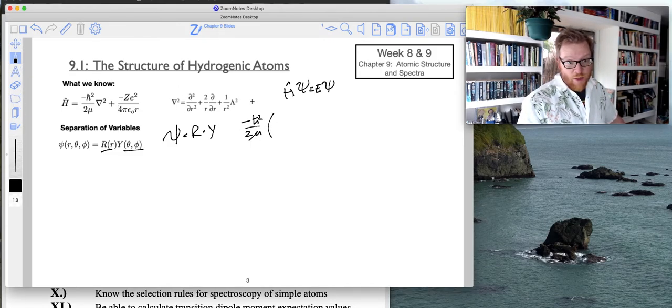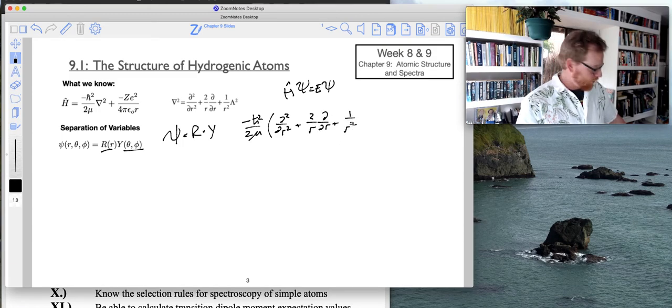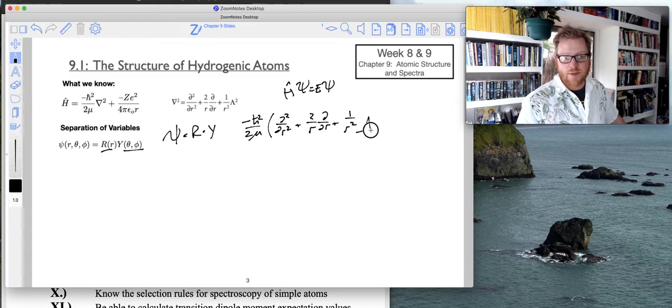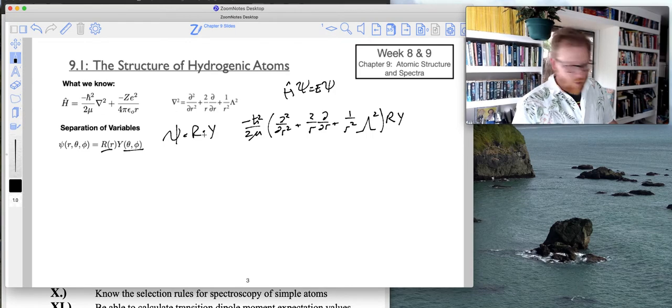So I'm going to say negative h-bar squared over 2 mu, and then now I'm going to replace the del squared with the actual Laplacian. So let's get all of that stuff in there, plus 1 over r squared times the Legendre squared. Beautiful. And now that's times r y, because right, h psi. We're calling psi r y.